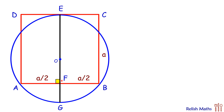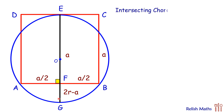Now, EF will be the same as BC, that is A centimeters. And GF — we know that EG is 2R, so GF will be 2R minus A. Now here we will be applying the intersecting chord theorem, which we have discussed in video number 16.